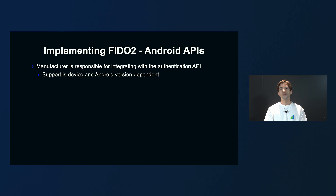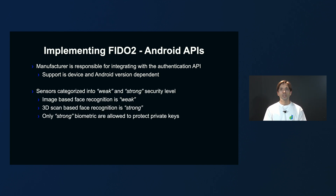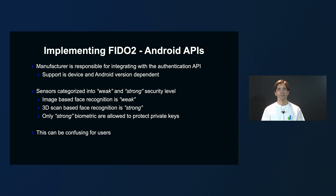There are additional problems with biometric authentication on Android. First, integration of the biometric sensor with an authentication API has to be done by the device manufacturer themselves, meaning support may vary depending on the device and Android version. Secondly, not all biometric sensors are made equal. On Android they are divided into weak and strong, depending on the level of security they provide. For example, image-based face recognition is considered weak, while 3D scan-based face recognition is considered strong. A weak biometric is allowed to authenticate the user but not to protect a private key — only a strong one can. These issues can be confusing for users because biometric authentication support will vary from case to case, and this is not explained to them, so they might blame the application developers. This means we have to take on the burden of explaining those details to users.